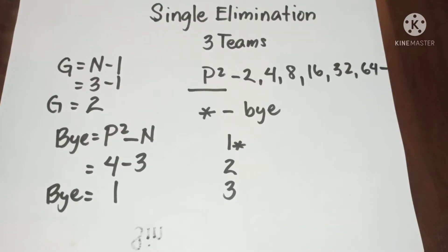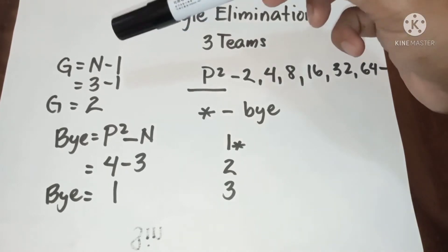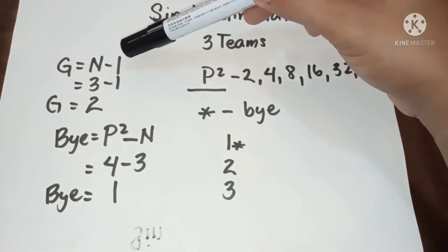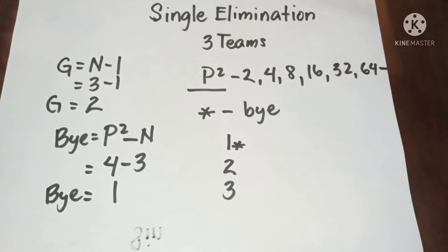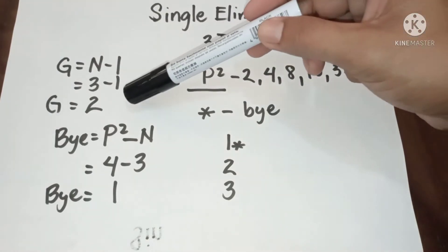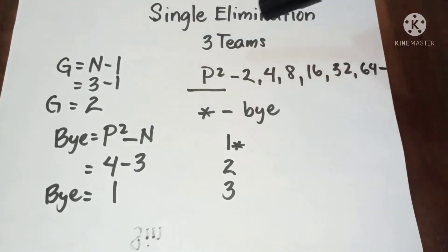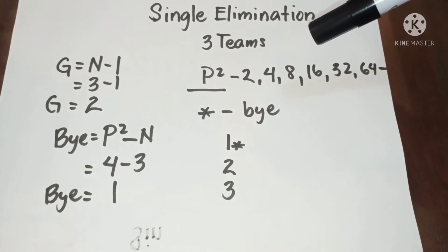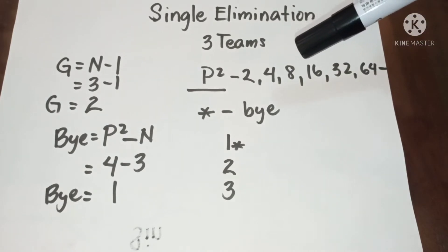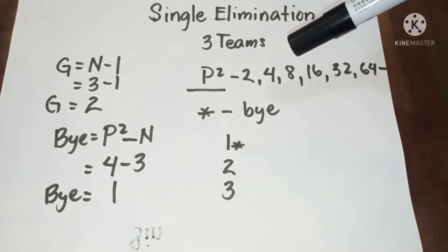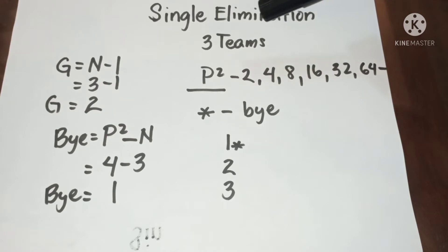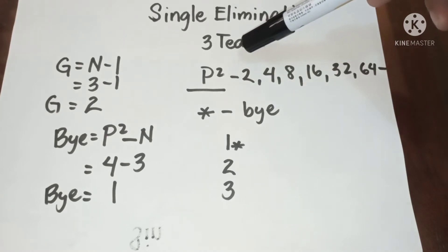Welcome to my channel. This is single elimination for three teams. The formula is G equals n minus 1, so the game number. We have two games, and then we need to identify the bye because three is an odd number.